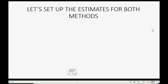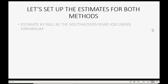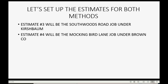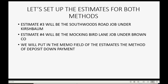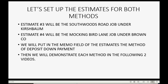Now let's set up two estimates, one for each method that will be demonstrated in the videos that follow. We'll make estimate number three for the Southwoods Road job under Kirschbaum, and estimate number four for the Mockingbird Lane job under Brown Company. We will put in the memo field of the estimate the method of the deposit down payment we're going to use, then demonstrate each method in the following two videos.